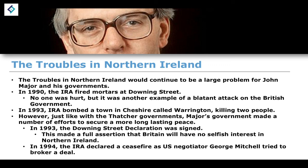Then in 1994, the IRA declared a ceasefire as the negotiator from the United States, George Mitchell, tried to broker a peace deal. These peace talks would ultimately fall through, but it does show a growing commitment on both sides of this particular conflict to resolve it and to maintain and secure a more long-lasting peace.